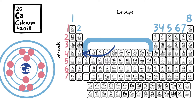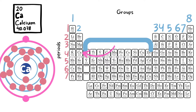But we must only fill the third shell with eight. We know this because the periodic table tells us calcium must have two electrons in its valence shell. In order to accommodate this we must place eight in the third shell, so we have two left over for the valence shell.